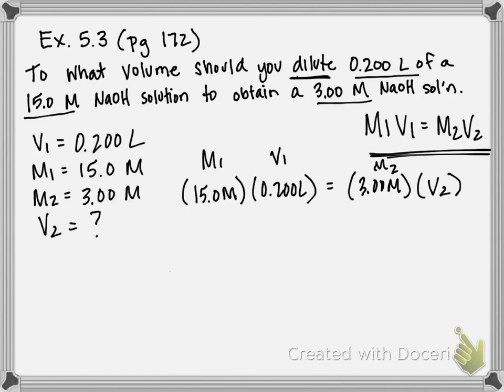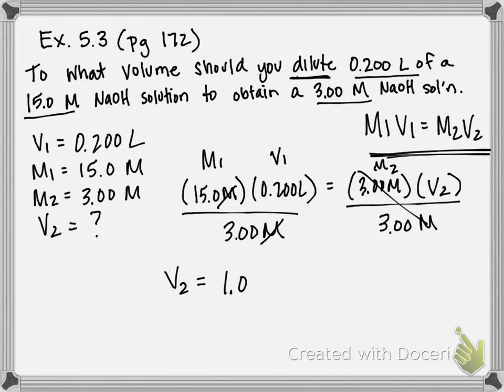So we want to get V2 by itself. We'll divide both sides by 3 molar. That's going to cancel out my molarity unit, and I'm going to be left in liters. So if I take 15 times 0.2, divide that number by 3, you should get that V2 is equal to 1 liter.